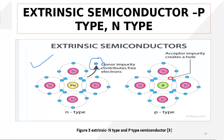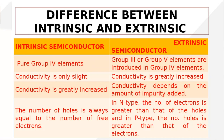The difference between intrinsic and extrinsic semiconductors: in intrinsic semiconductors we have pure elements from Group 4, while in extrinsic semiconductors we introduce Group 3 or Group 5 elements into the Group 4 elements. In intrinsic semiconductors, conductivity is small because the number of electrons and holes is low. When we add impurities, conductivity increases.